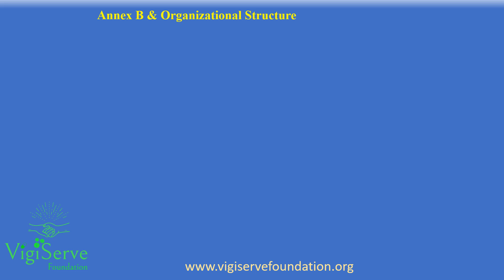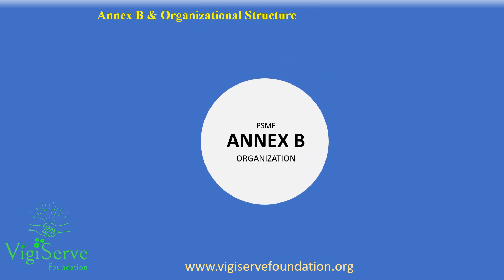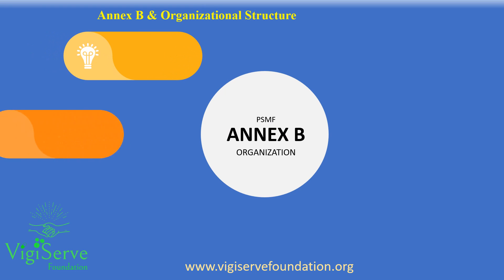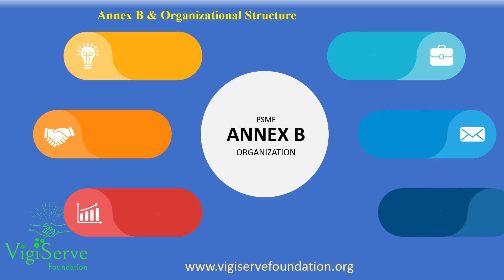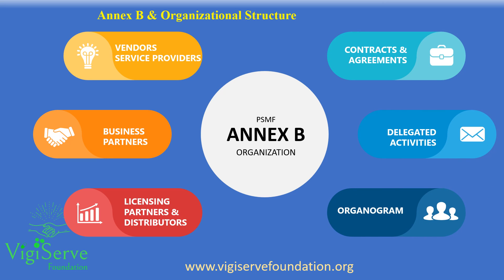Annex B pertains to information on the organizational structure of the applicant or the marketing authorization holder, that also includes the business partners, vendors and service providers. We need to maintain a list of contracts and agreements with the service providers. It is also advisable to maintain a copy of the individual contractual agreements. Besides, we also need to provide a list of distributors and licensing partners.